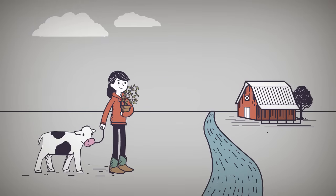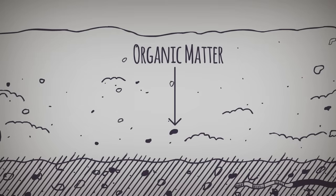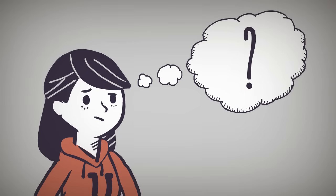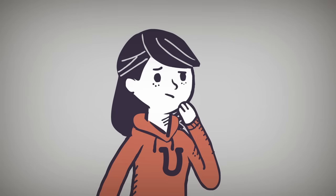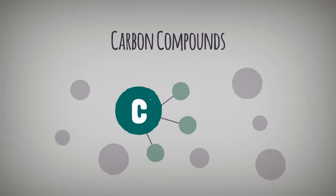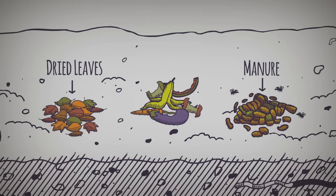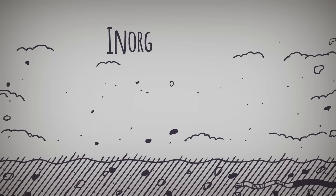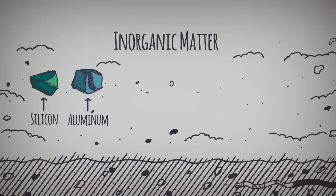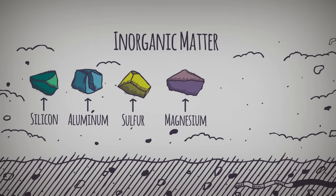Especially in the soil's organic matter — which, by the way, is not the same thing as organic produce. Organic matter is anything formed by living organisms that contains carbon compounds, such as manure, dried leaves, and food waste. Inorganic matter, on the other hand, is composed of other common elements like silicon, aluminum, sulfur, magnesium, phosphorus, and potassium.